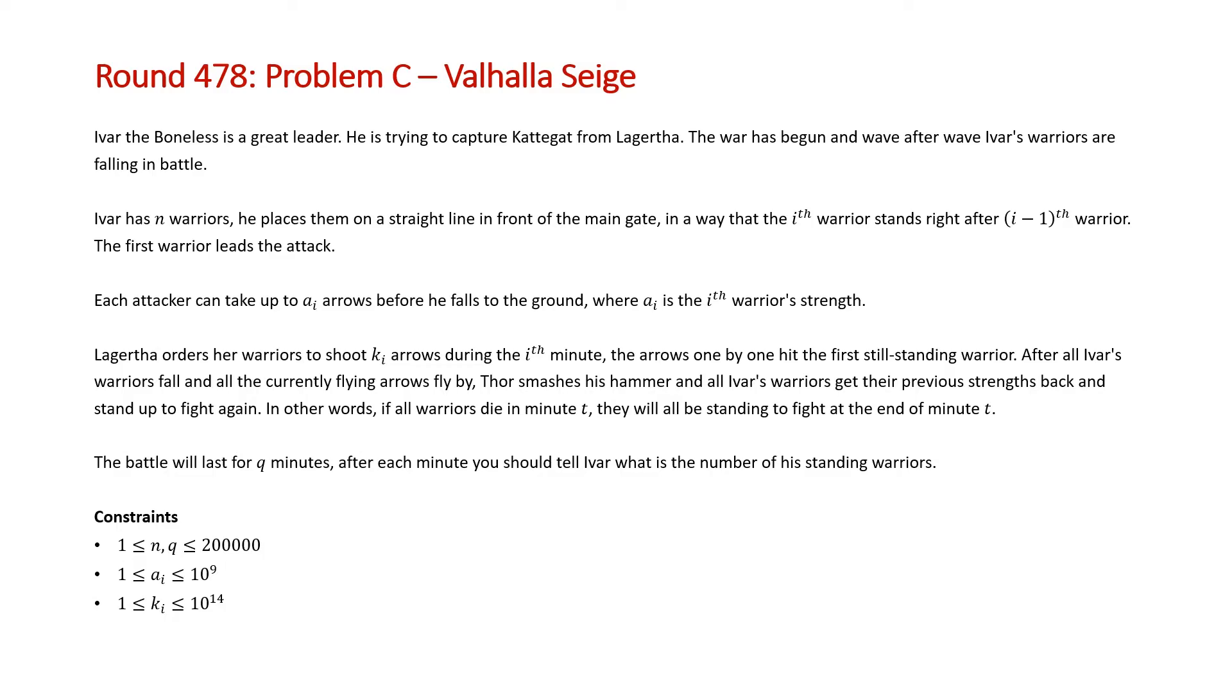The problem states Ivar the Boneless is a great leader. He is trying to capture Katagat from Lagertha. The war has begun and wave after wave of Ivar's warriors are falling in battle. Ivar has N warriors. He places them on a straight line in front of the main gate in a way that the Ith warrior stands right after the I-1th warrior. The first warrior leads the attack. Each attacker can take up to AI arrows before he falls to the ground where AI is the Ith warrior's strength.